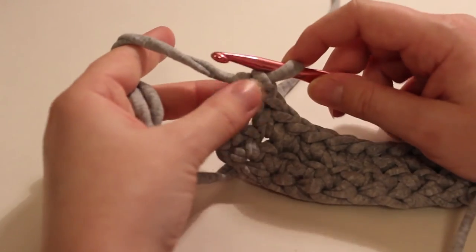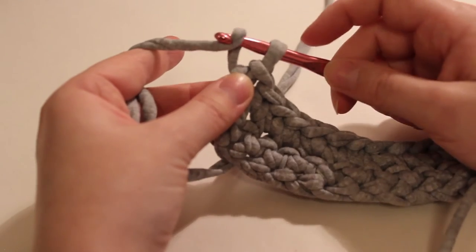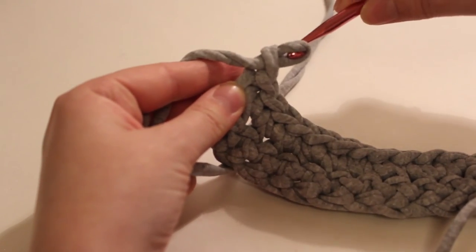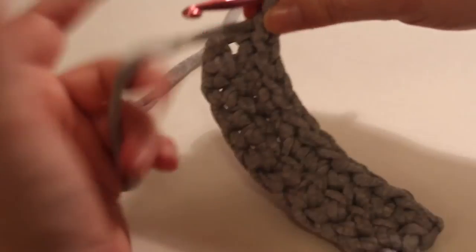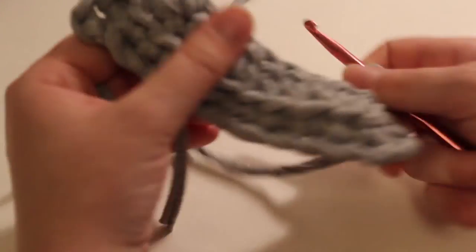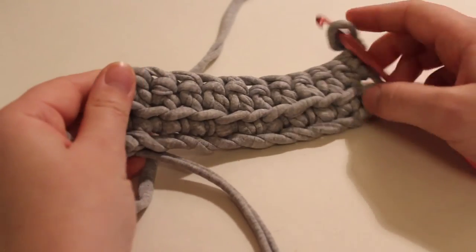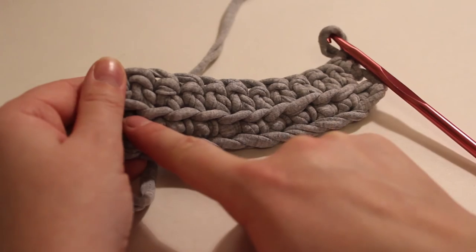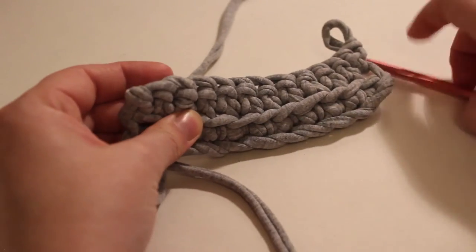And to turn, you are going to chain one. So yarn over, go through the one loop on your hook, and then turn the entire work. And now you can see this line here, which means that we did not work in that part of the stitch.